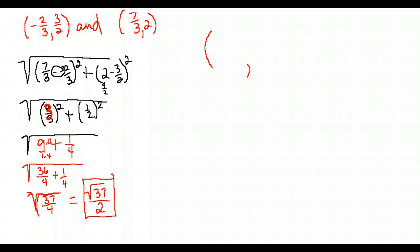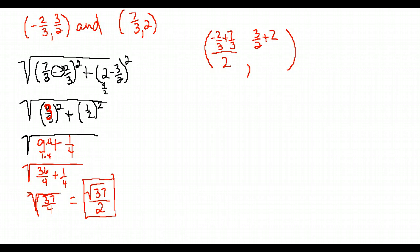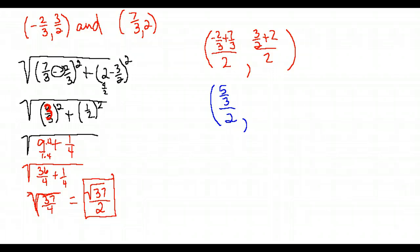Let's find the midpoint with these fraction points. We add the x values: negative two thirds plus seven thirds, divided by two. Add the y values: three halves plus two, divided by two. Negative two thirds plus seven thirds gives five thirds, still over two. For the y: two is four halves, so three halves plus four halves is seven halves, all over two.